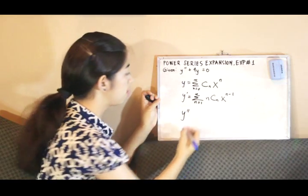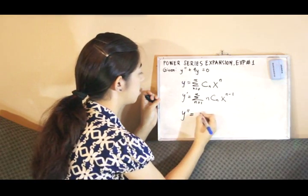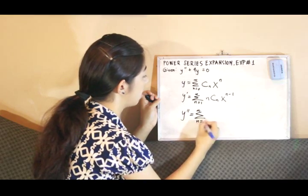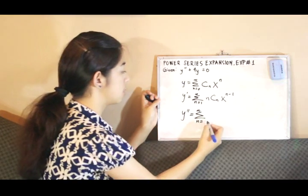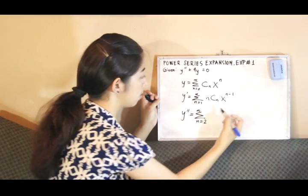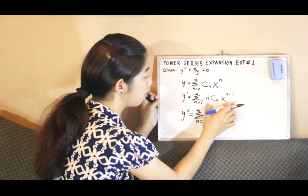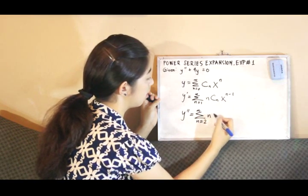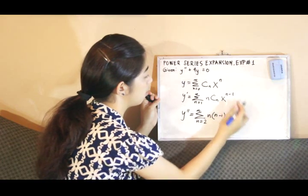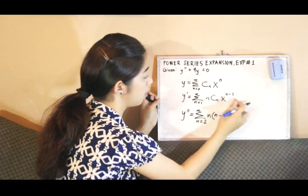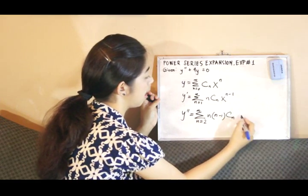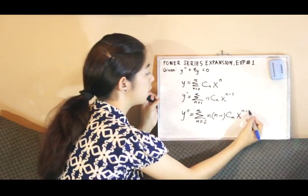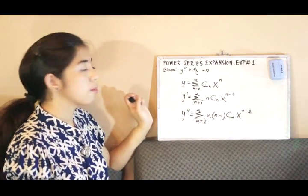we will have y double prime equals the summation of terms when n is initially equal to 2. Deriving this, we obtain n times n minus 1, times c sub n, x raised to n minus 2.